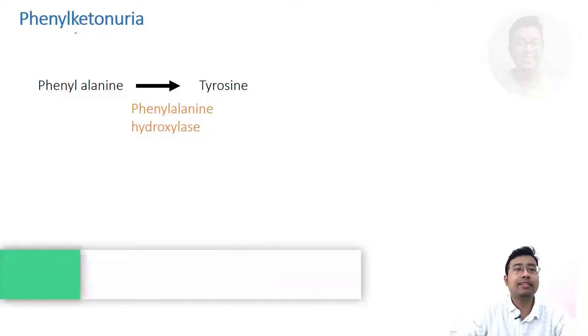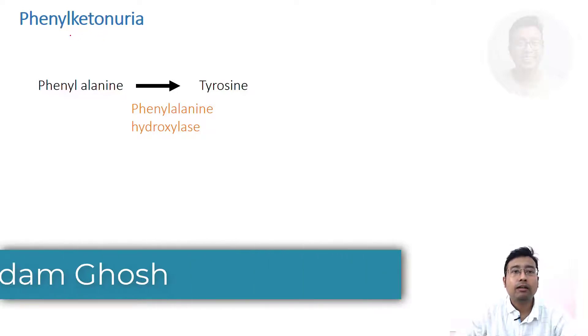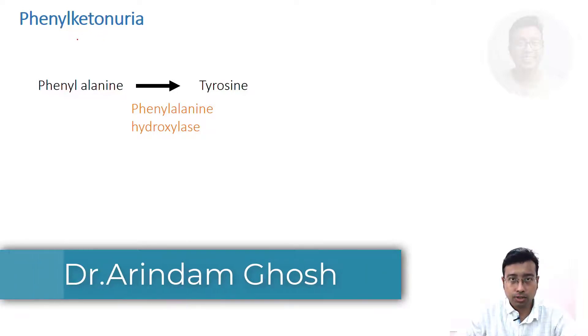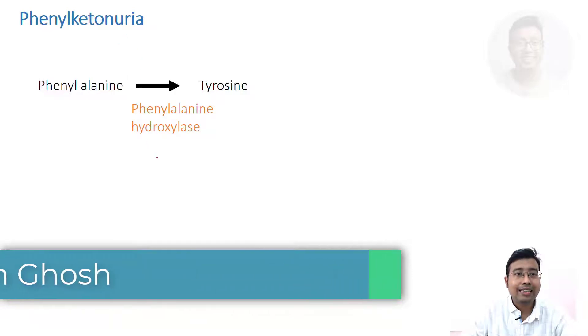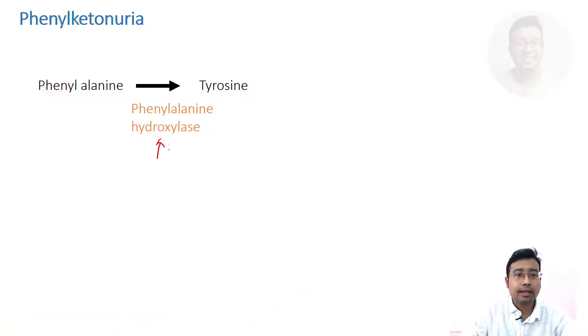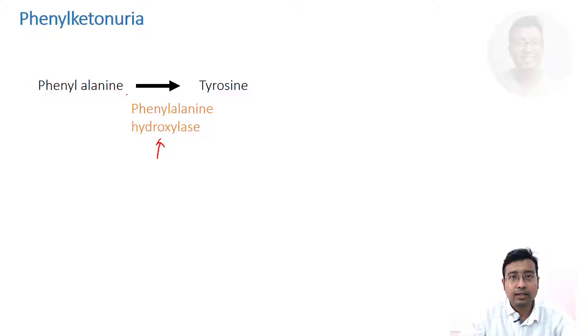Hi students. Today we will be discussing about phenylketonuria. This is a disease that is produced when this enzyme is defective. The enzyme is phenylalanine hydroxylase.